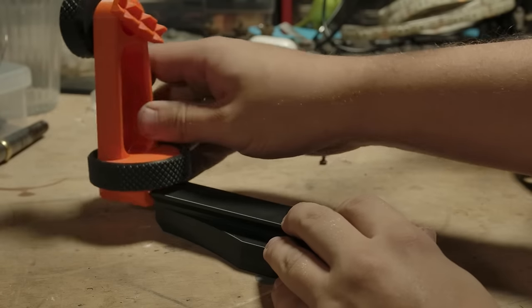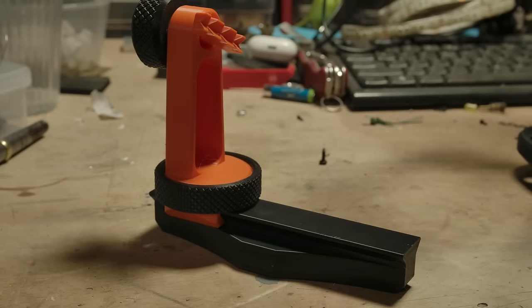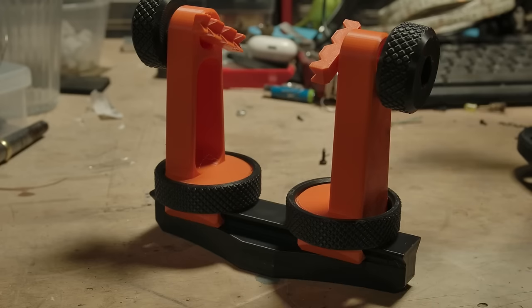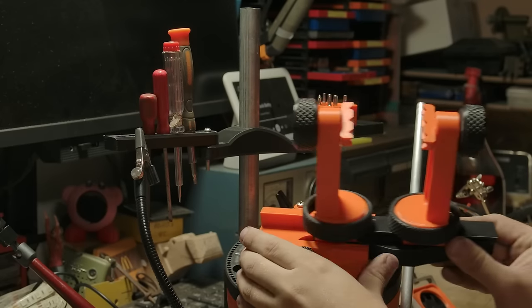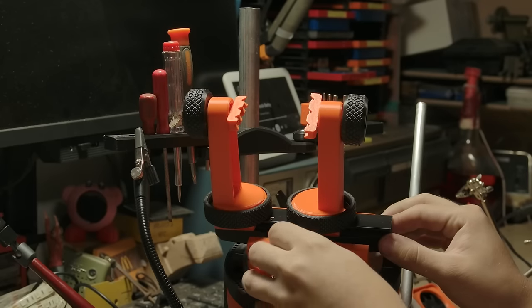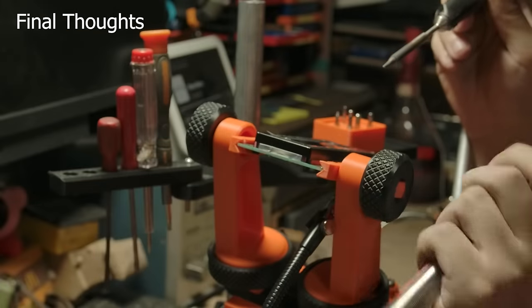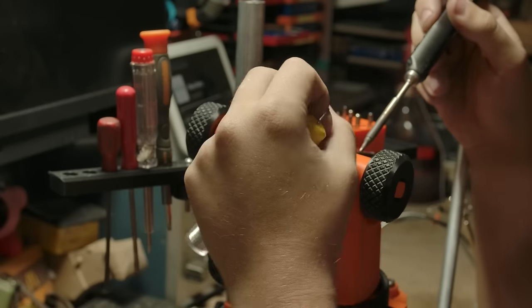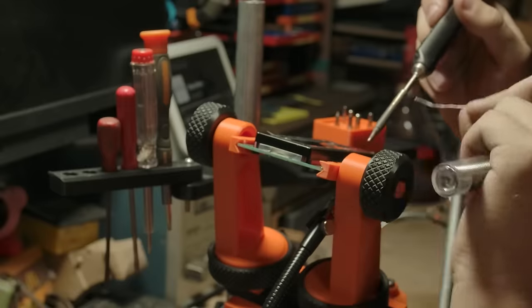I've only made one new work holding option, and that's a remix of the popular PCB holder by squinn on printables. It slides and locks into the dovetail like all the other work holding solutions. Okay, let's see if I can get a good shot without getting my hand in front of the camera. See, this is comfortable, but then you can't see anything.